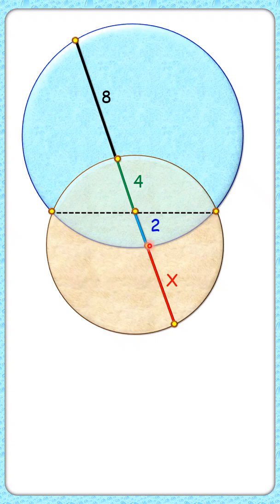Can you find the value of x? Here we are given two circles intersecting at points M and N, and this line segment AB is divided into four parts: 8, 4, 2, and x centimeters.